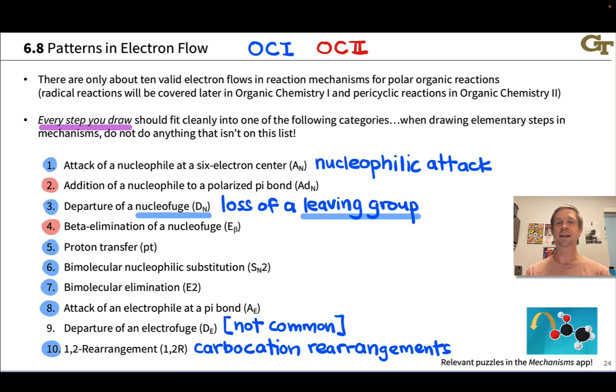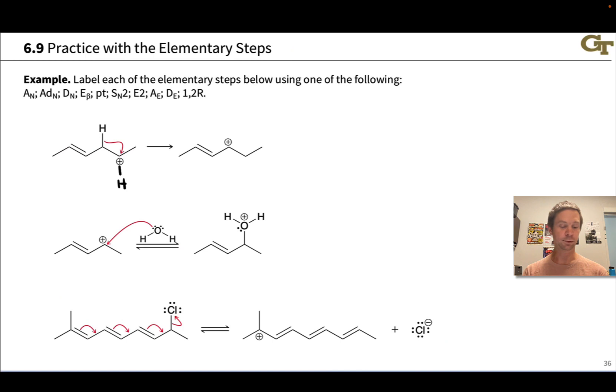In this video, we're going to recognize and classify elementary steps in polar organic reaction mechanisms as one of the 10 patterns in electron flow that we encounter in organic reaction mechanisms. Keep in mind, every step you draw and every step you see will fit into one of these 10 boxes, and we're going to practice putting elementary steps in those boxes in this video, keeping in mind lessons about resonance and focusing on where sigma bonds are made and broken.